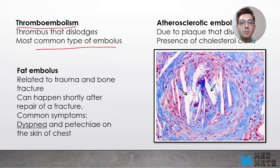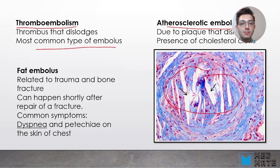Another form is atherosclerotic embolism. When we have atherosclerosis, seen in this picture, one part of the atherosclerotic plaque dislodges and travels into our blood vessels. What is observable here is the presence of cholesterol clefts, and under the microscope you can see these crystal-like lines.